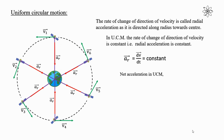Net acceleration in uniform circular motion is the radial acceleration. Even though there is angular displacement and angular velocity in uniform circular motion, the angular velocity is constant, and that's why the angular acceleration is 0. So the only acceleration present in uniform circular motion is the radial acceleration. Therefore, net acceleration is equal to radial acceleration.